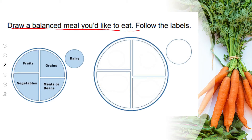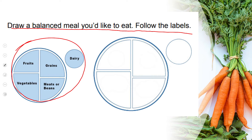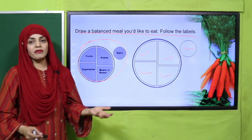The next part is to draw a balanced meal you'd like to eat and follow the labels. A balanced meal means your plate should have portions of every food group — draw your favorite fruits, grains, vegetables, meat, and dairy products. Color them as well. Pause the video, complete the activity, and then continue. I hope everybody has finished.